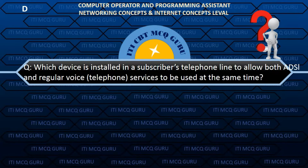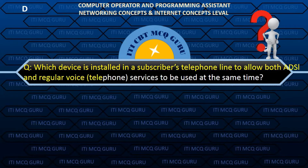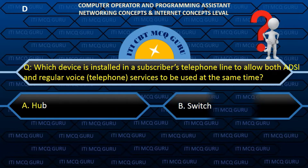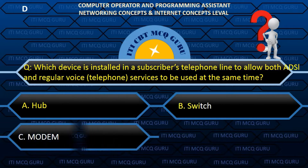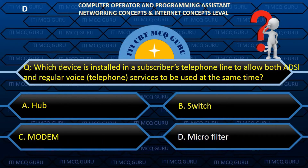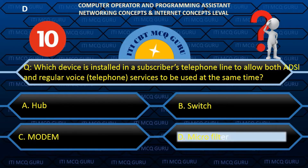Which device is installed in a subscriber's telephone line to allow both ADSI and regular voice telephone services to be used at the same time? D. Microfilter.